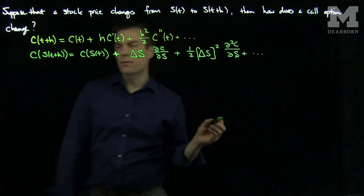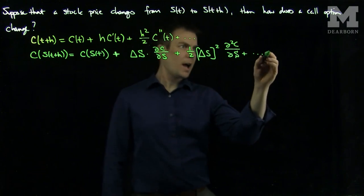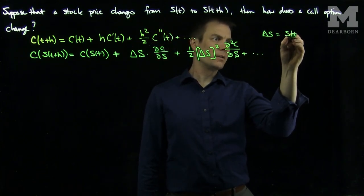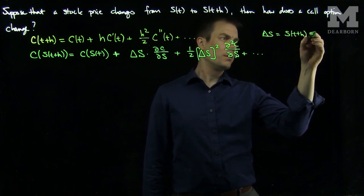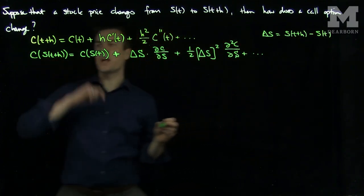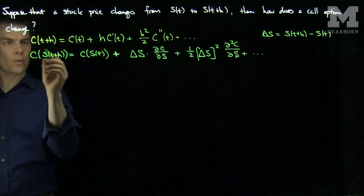So what we have over here is where the ΔS is S(t+h) minus S(t), the change in the stock price, so we apply the Taylor formula with S.